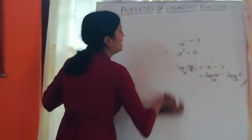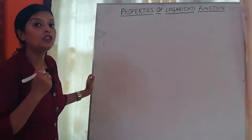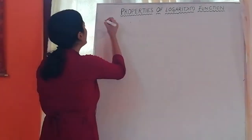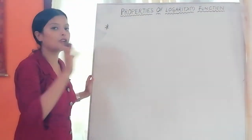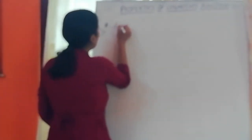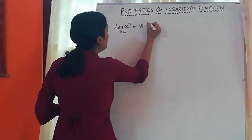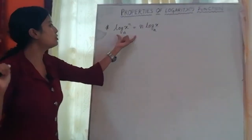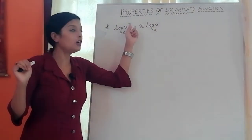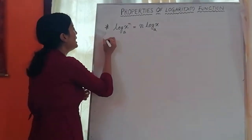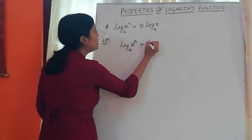Now for the next property involving the power rule: log(xⁿ) base a is equal to n times log x base a. Let's prove it. We take the left-hand side: log x to the power n base a, and let this equal k.